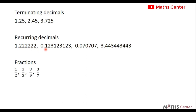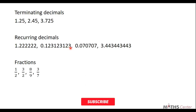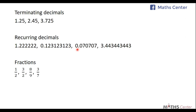Another example of a recurring decimal is 0.123123123..., where 1, 2, 3 keeps recurring. Also 0.070707... and 3.443443443... are recurring decimals. Fractions such as 1/2, 3/2, 8/9, and 3/7 are also examples of rational numbers.